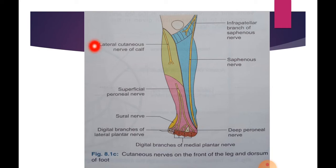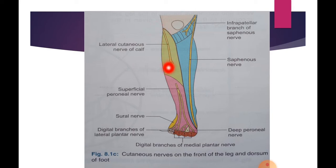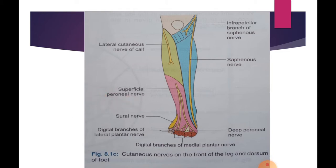Next we have the lateral cutaneous nerve of the calf. It is a branch of the common peroneal nerve. It pierces the deep fascia over the lateral head of the gastrocnemius, then descends downwards and supplies the skin of the upper two-thirds of the lateral side of the leg.